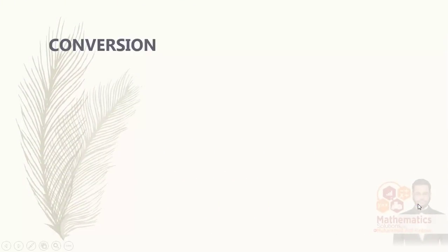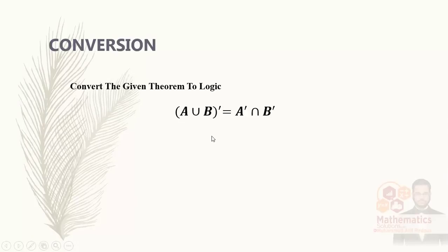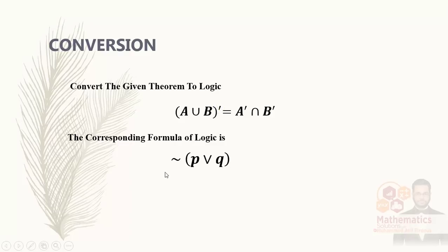Next is conversion — converting a given theorem to logical form. This can also appear in objectives. Complement means negation (as we studied in the theory), union means 'or', and A becomes P, B becomes Q. The corresponding formula for logic is: complement means negation, A means P, union means 'or', B means Q. Similarly, A-complement means negation of P, and B-complement means negation of Q. We will also use this in the upcoming exercise.